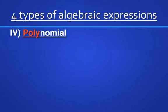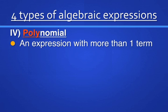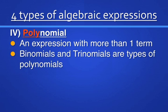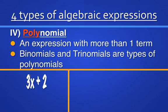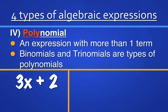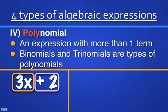We also have polynomial. Poly basically means an expression with more than one term. Binomials and trinomials are types of polynomials — it's important to keep that in mind. The word 'poly' means many, so a polynomial really just means an expression with many terms. For example, 3x plus 2 has two terms — 3x and positive 2 — so it is a binomial, and because it is a binomial, it is also technically a polynomial.